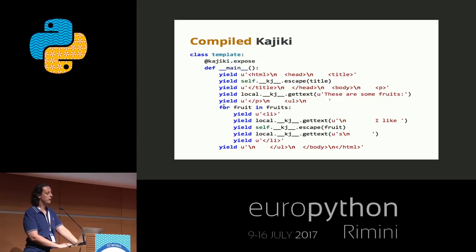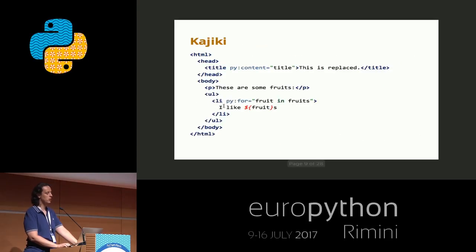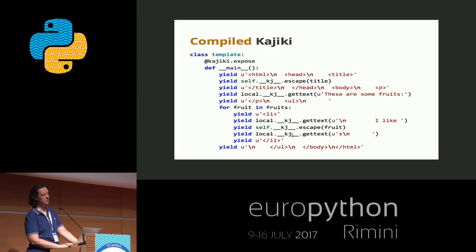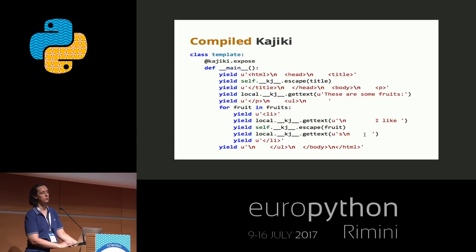Kajiki also provides the for loop compilation. Because we added a py:for tag to a list item, Kajiki compiles it to a for loop that prints the list item and its content. You can see the variable yielded and then a new line. This is actually an old version of Kajiki because in recent versions, empty text won't be translated — it will just be skipped. And then you have the ending part of your template.